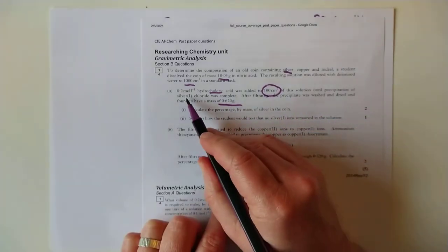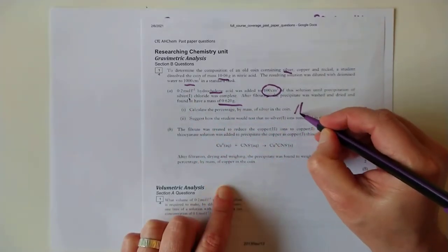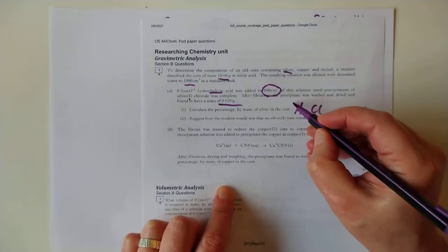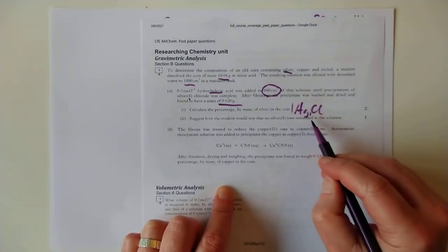What I would do first is I would turn the precipitate into a number of moles. Silver one chloride, by the way. That's important because that's AgCl. So that means for every one of these, there's one silver.